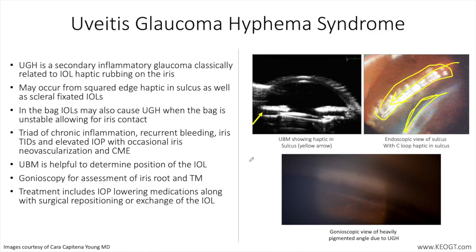Ultrasound biomicroscopy is helpful to determine the position of the IOL. You can see here a UBM image with a tilted optic on the intraocular lens and the haptic sitting posterior to the iris and in the sulcus, as opposed to the opposite side haptic which is sitting in the capsular bag. It is important to note that UBM can often indicate opposition of the haptic and or optic against specific ocular structures like the iris, but is not definitive evidence that the lens is out of the capsular bag, since capsular bags may be compromised and may still allow for tilting and contact with adjacent structures despite the IOL being entirely within the capsular bag.